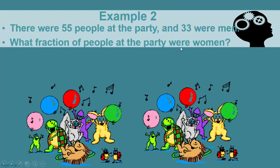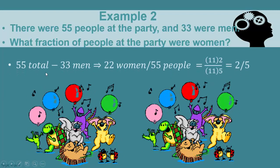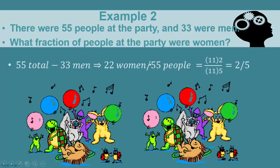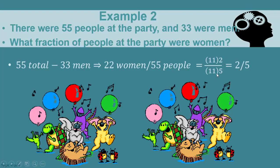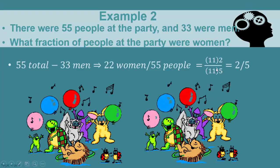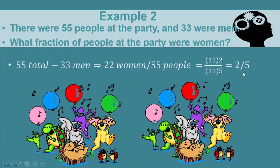Returning to the PowerPoint for example two, we can summarize: the total number of people minus the thirty-three men gives twenty-two women. Dividing by the total of fifty-five gives the fraction twenty-two over fifty-five. Eleven goes into both twenty-two and fifty-five, so we factor out eleven to get eleven times two over eleven times five, cancel the elevens, and arrive at two-fifths.